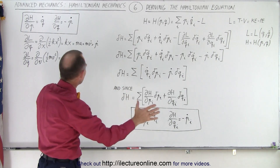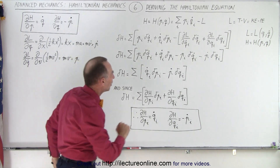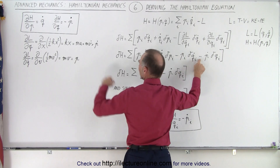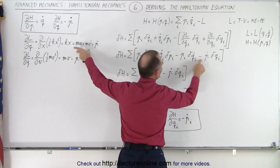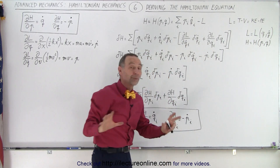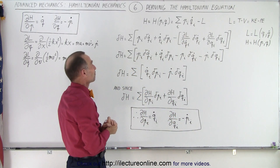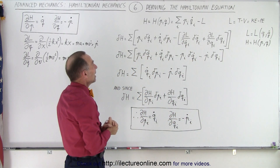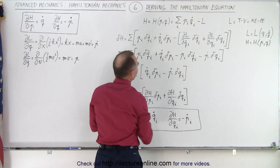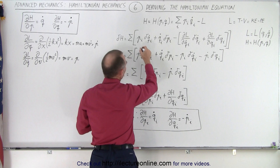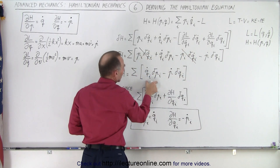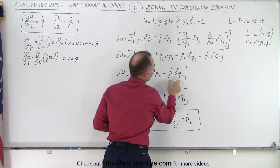The negative sign applies to both of these terms and comes from the subtraction we performed. Notice that one term here and one term here are identical, so they cancel out — this term cancels with this term — leaving us with the remaining two terms.